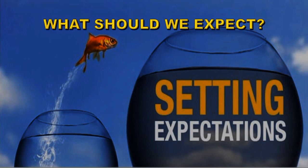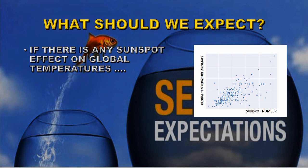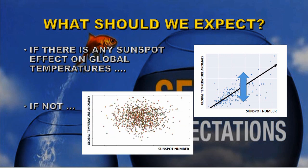Before we start we should set our expectations. What would we expect to see under different circumstances? If there is any sunspot effect on global temperatures we'd expect to see some sort of relationship with a distinct trend in the data — the width of that trend showing how much global temperature depends on sunspot number. A narrow spread means strong dependence; a broad spread means little or no dependence. If there's no link, we'd expect a scatter plot with no specific trend at all and very large scatter.